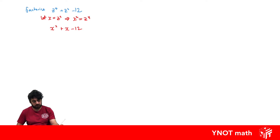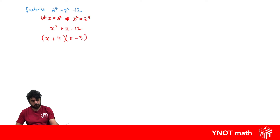We look for two numbers that multiply to negative 12 and add up to 1 — that's plus 4 and minus 3. Substituting x equals z squared back in, we get z squared plus 4, all times z squared minus 3.